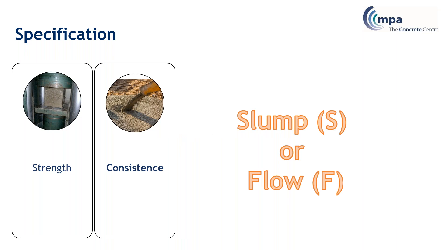The next thing to think about is consistence, or workability as it used to be called. This is one for the contractor who's actually going to be placing the concrete, and should be specified by the contractor who knows how he's going to place it. It will either be given as a slump class - S1, S2, S3 - or a flow class - F1, F2, F3. Slump and flow depend on how flowable the concrete is. A fairly well-packed mix uses slump; if it's been designed to be a flowing mix - not one that's just got too much water in it - then you would use the flow class.